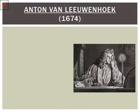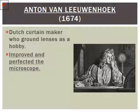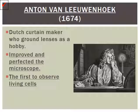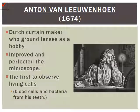The next one is Anton von Leeuwenhoek. He was a Dutch curtain maker who, in his spare time, liked to grind optical lenses. He improved and perfected the microscope's design, allowing him to see things at higher magnification. He was the first to see living cells — whereas Robert Hooke was the first to see dead cells. To do this, he looked at blood cells and even bacteria from his own teeth scrapings.